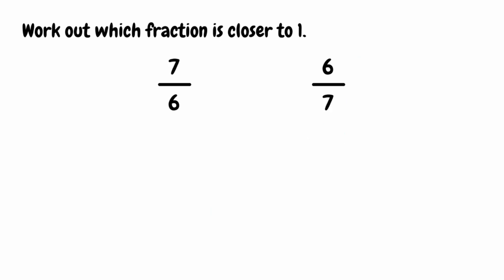For the next question, we again want to see which fraction is closest to 1. We've got 7 sixths and also 6 sevenths. We're going to find equivalent fractions for both with a common denominator, so we look for the lowest common multiple of 6 and 7, which in this case would be 42.